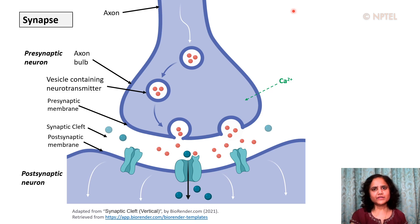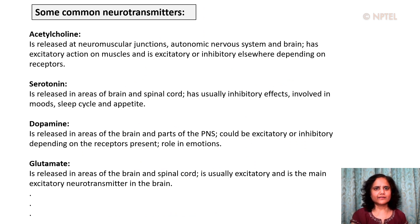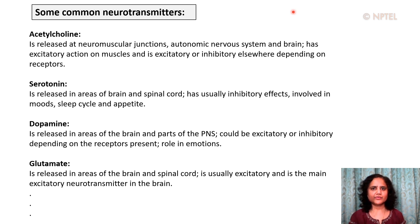The neurotransmitters can have excitatory or inhibitory effects on the postsynaptic cell. One common neurotransmitter is acetylcholine, which is released at neuromuscular junctions, in the autonomic nervous system, and in the brain. It has excitatory action on muscles and is excitatory or inhibitory elsewhere depending on the receptors present. Acetylcholine travels from the neuromuscular junction, binds to acetylcholine receptors which are activated, and can generate muscle contraction.